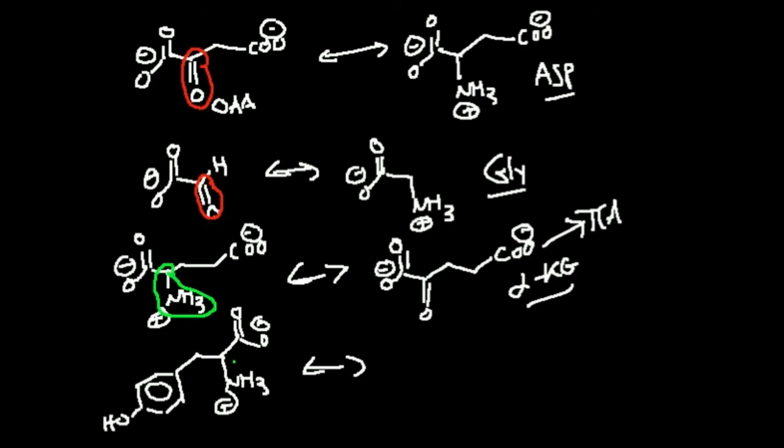What happens if we transaminate that? We're just going to take this amine and put a carbonyl in its place. So we still have that ring, nothing changes there, but we get this. And it turns out this molecule is called parahydroxyphenylpyruvate.